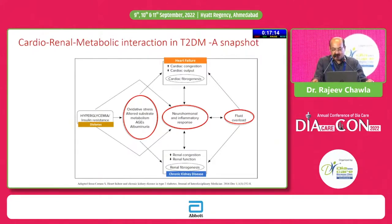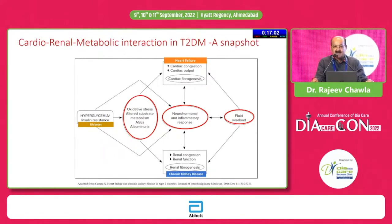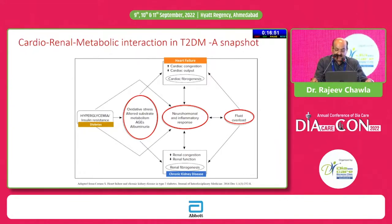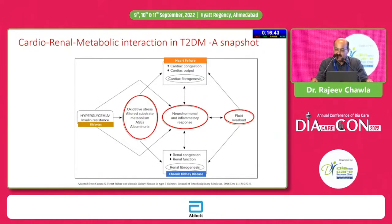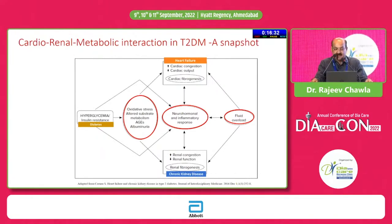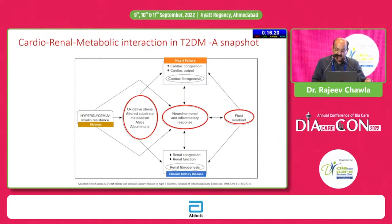We have evolved to a cardio-renal metabolic approach. Persistent hyperglycemia and insulin resistance induce a huge amount of oxidative stress and inflammation — a defensive physiological mechanism — but with persistent hyperglycemia, advanced glycation end products, and neurohormonal and inflammatory responses, there is going to be fluid overload. This leads to cardiac congestion, reduction in cardiac output, cardiac fibrogenesis, renal congestion, reduced renal function, renal fibrogenesis, and sets the stage for chronic kidney disease.